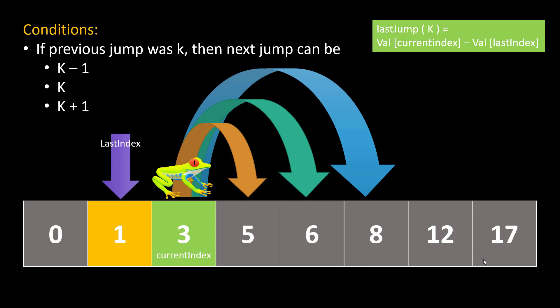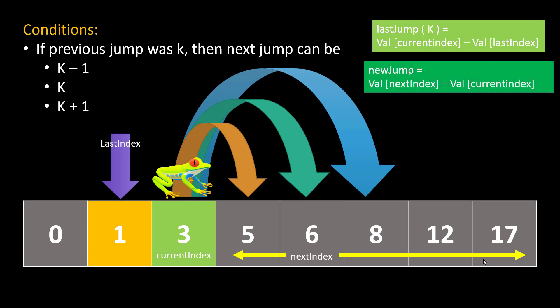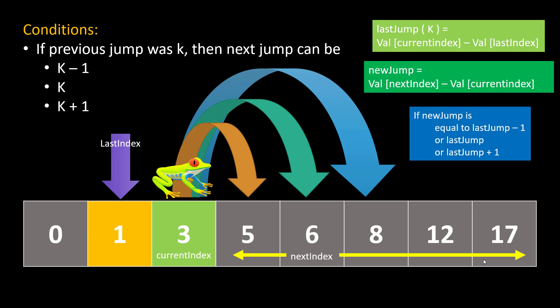Now we have the last index. The next jump is purely dependent upon the next index we are going to. The next index can lie anywhere between current index plus 1 till the last index of the array. The new jump is the difference between the value at the next index and the value at the current index. So now we have both jumps — the last jump and the new jump — and the precondition relationship between them. We just need to find out if the new jump and the last jump follow the condition. This saves computation compared to checking all jumps and sometimes landing on water.